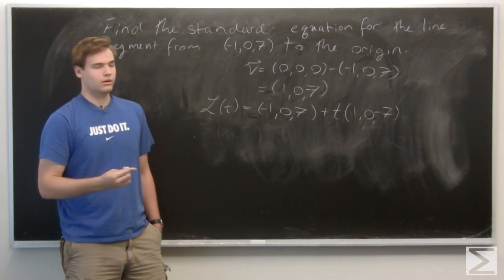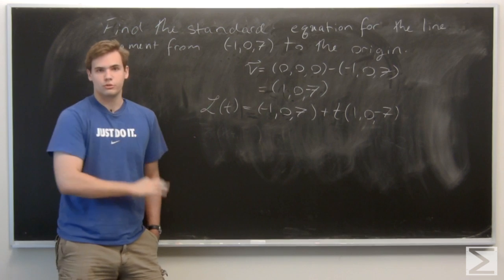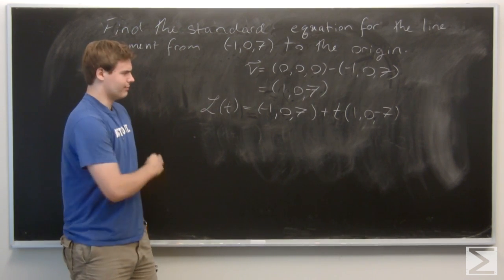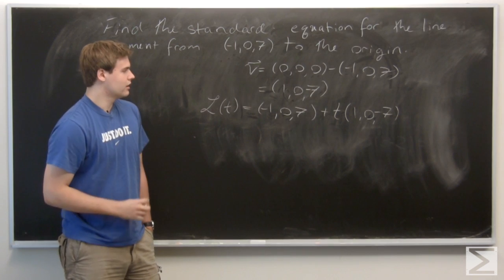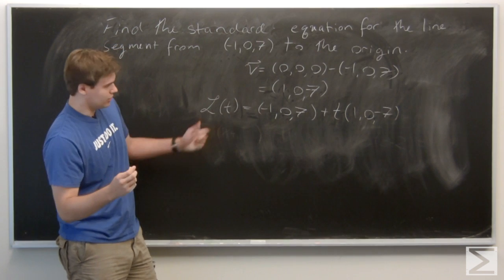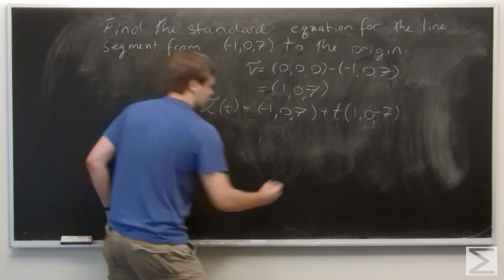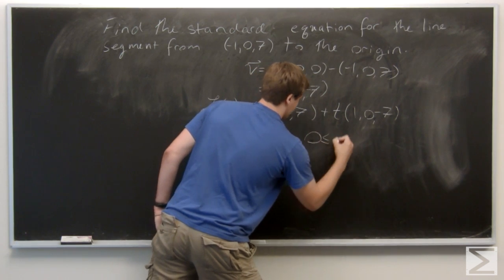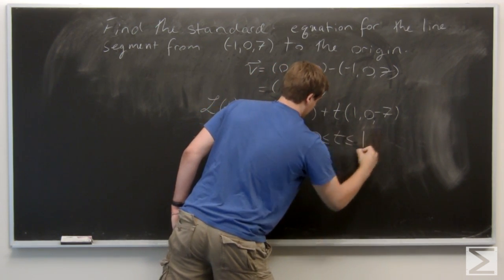Normally, if you're just talking about the line, we wouldn't put any restrictions on t. It would just be some arbitrary real number. But now since we want to talk about it as a segment, it's a bounded segment in R³. So we want to make the restriction that t goes between 0 and 1.